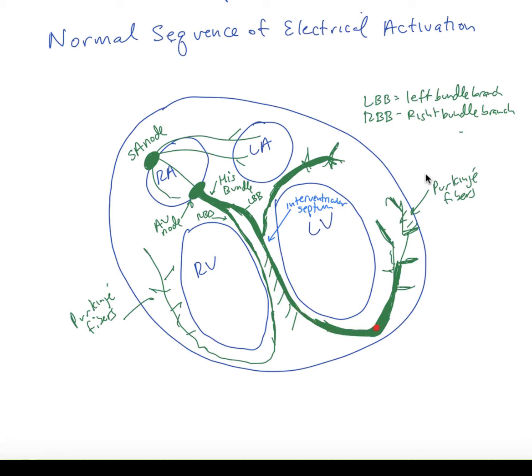Once we get down to the apex of the heart, we see the penetration of the right ventricle with the Purkinje fibers coming off the right bundle branch, and the same thing on the left, with Purkinje fibers penetrating the left ventricular muscle. That is how the depolarization spreads.